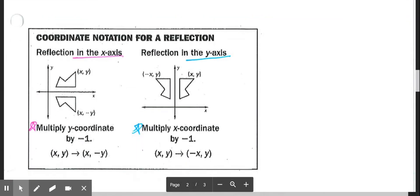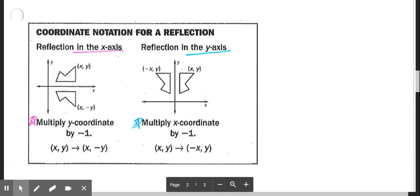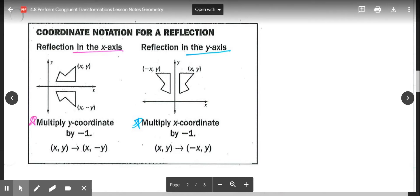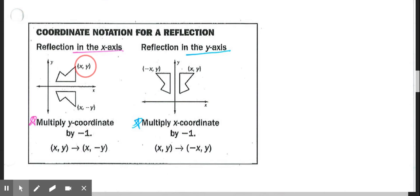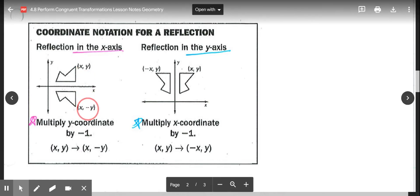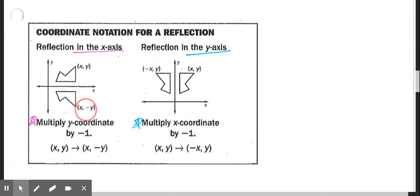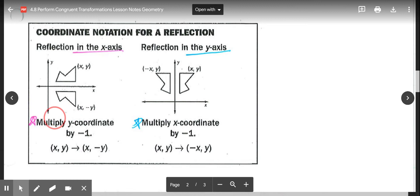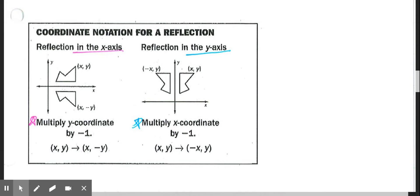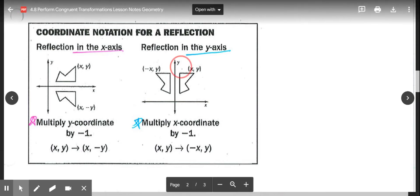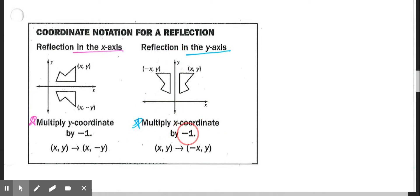And then we get into the notation for a reflection. If you're ever reflecting over the x-axis, if we have our coordinates (x, y), if that gets reflected over the x-axis, the new coordinate would be (x, -y). So the rule is when you reflect over the x-axis, to get your new points, you multiply the y coordinate by negative 1. If we're reflecting over the y-axis, the rule is to multiply the x coordinate by negative 1.